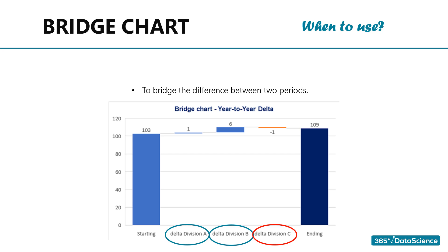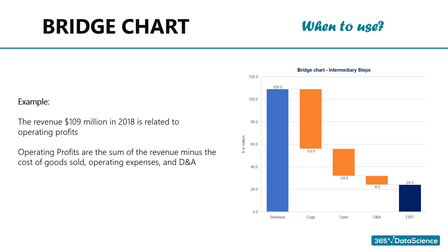In a similar fashion, a Bridge Chart can show us how one variable was influenced by a series of factors to obtain a specific output. For example, heavily used in finance: the company's revenues were equal to $109 million in 2018. What if we would like to create a visualization showing how revenues are related to operating profits? Here's the equation: operating profit equals revenue minus cost of goods sold minus operating expenses minus D&A. There are three intermediary steps between revenues and operating profit, and a Bridge Chart allows us to show the impact of each of these steps.